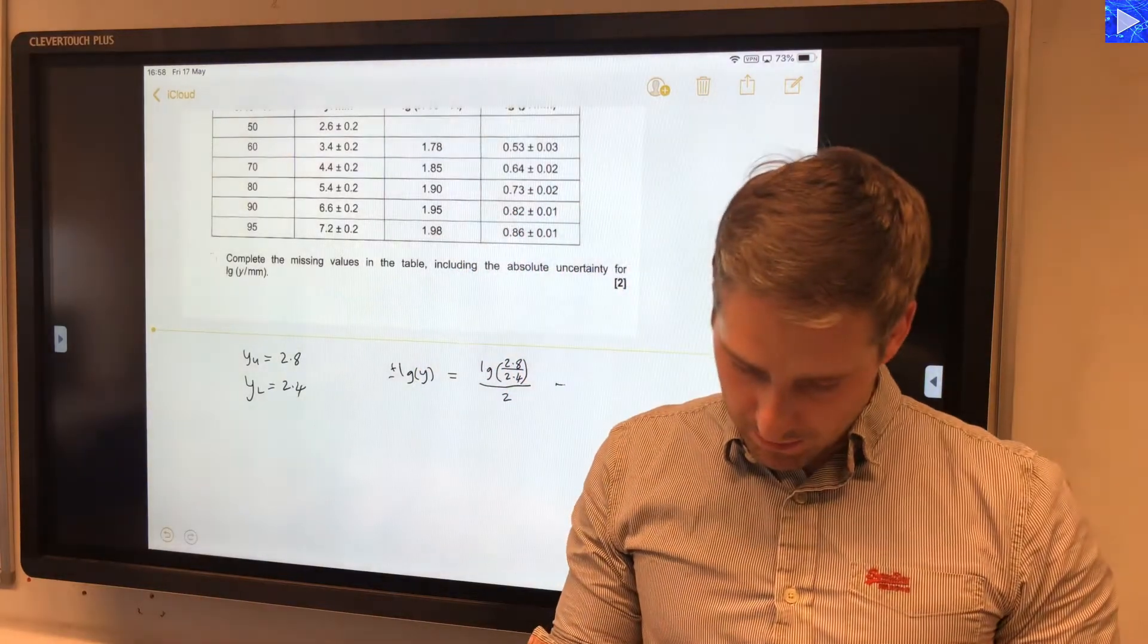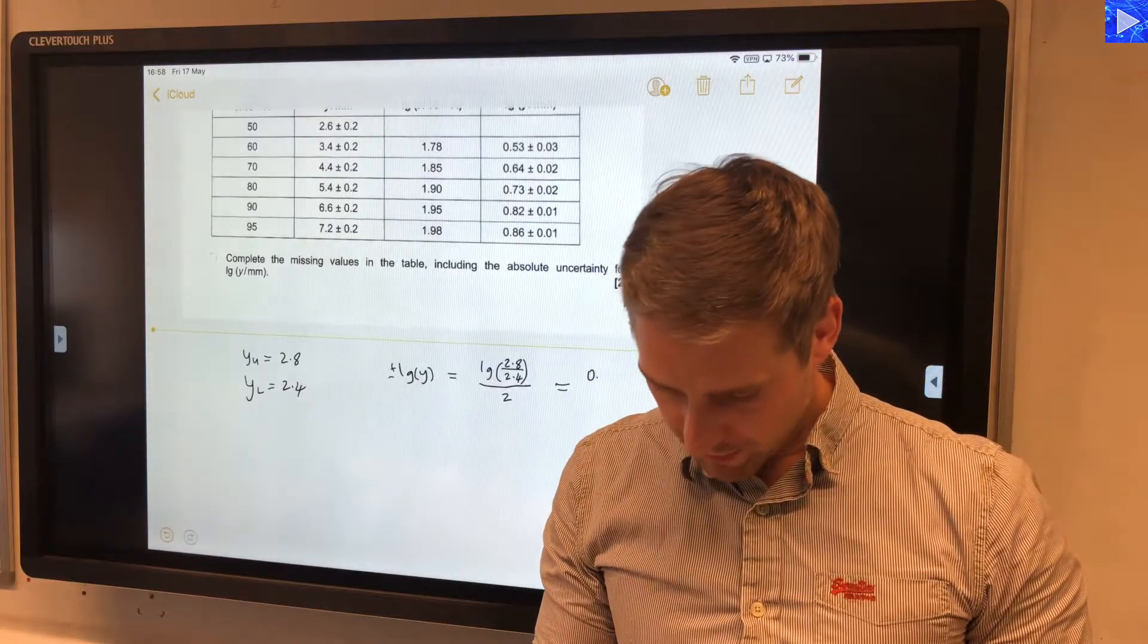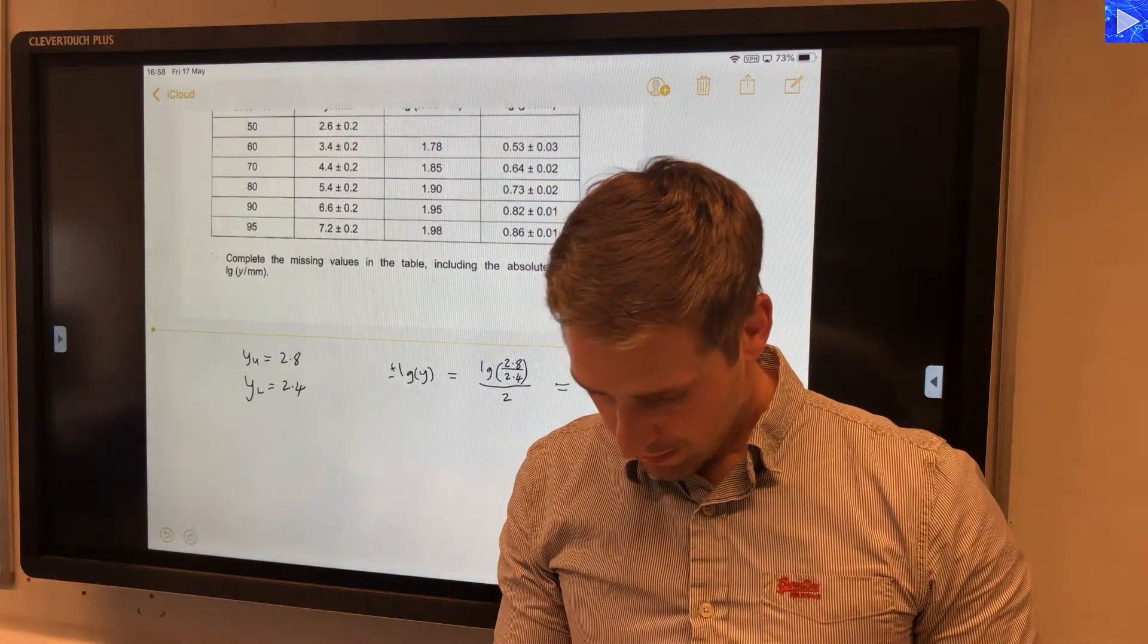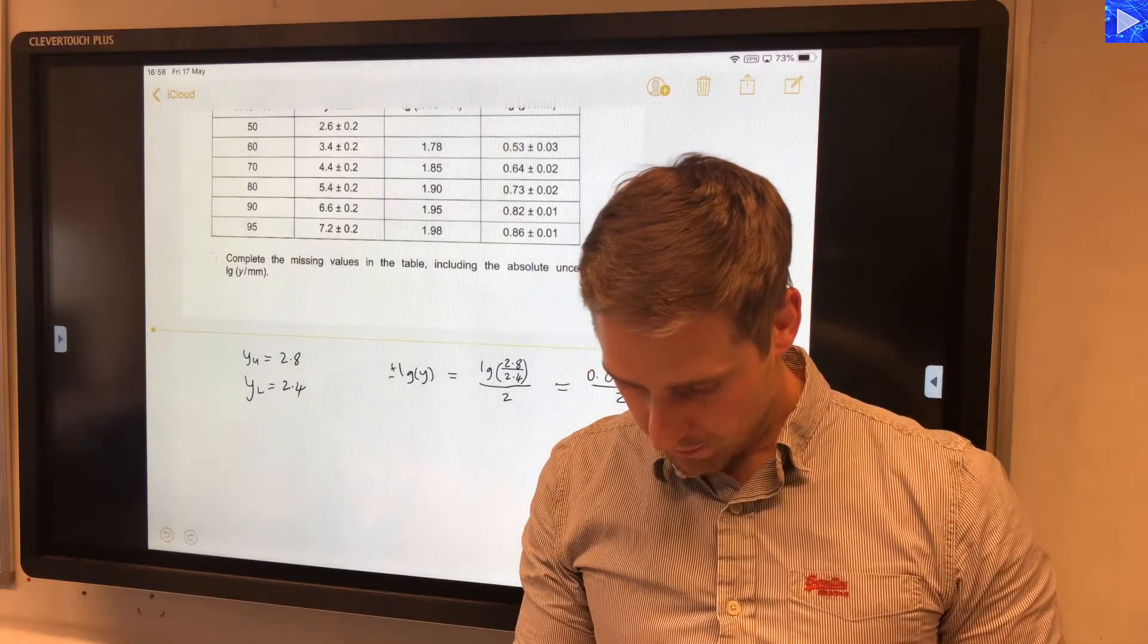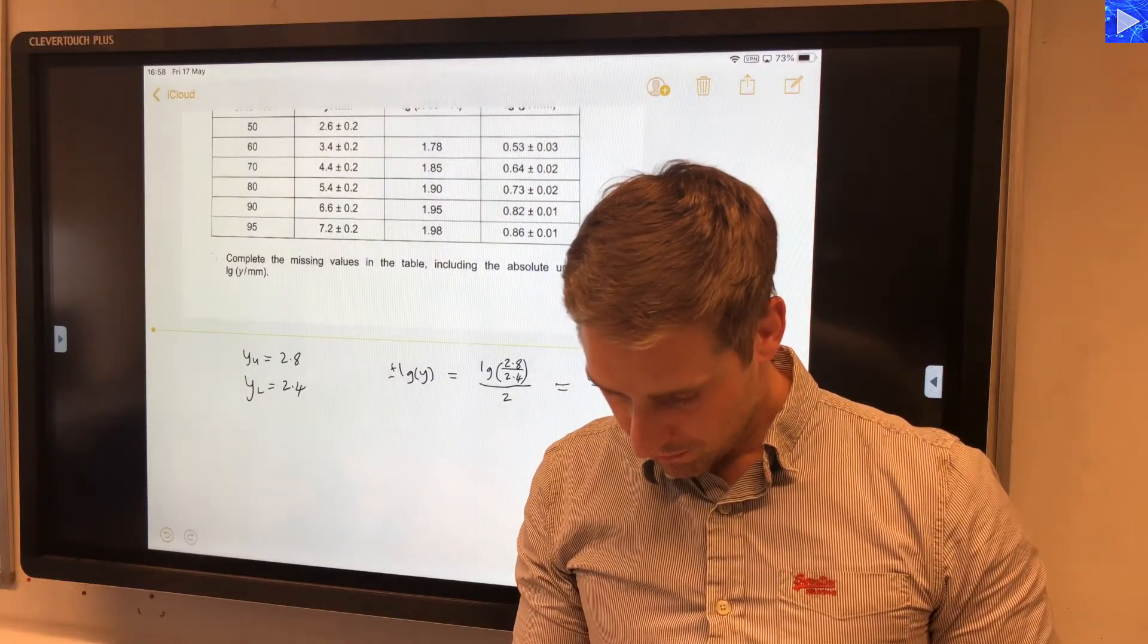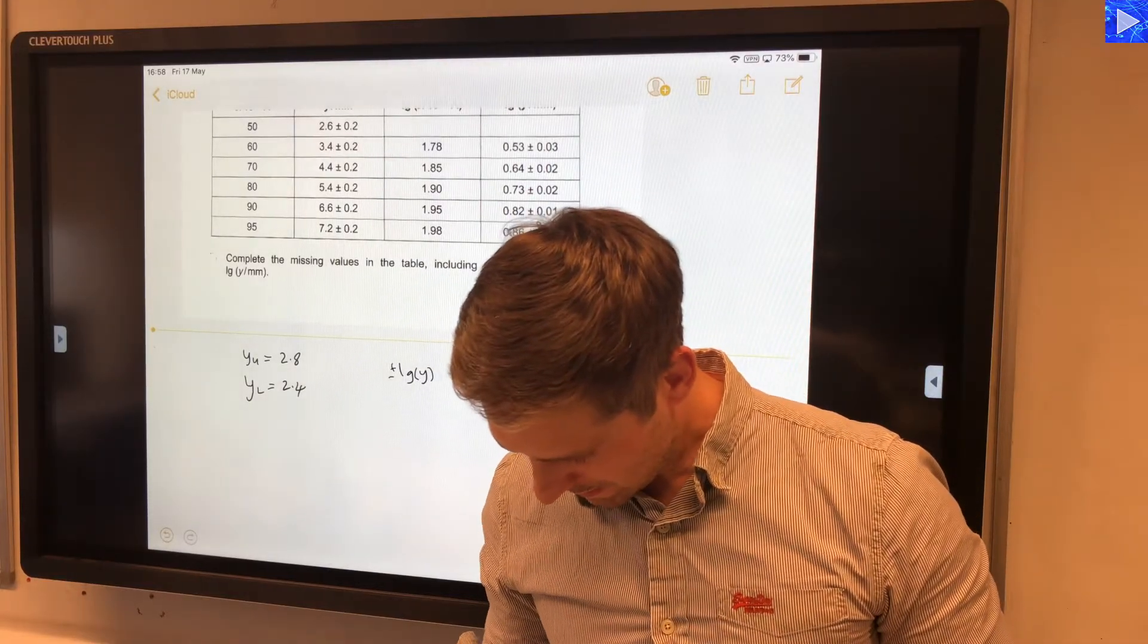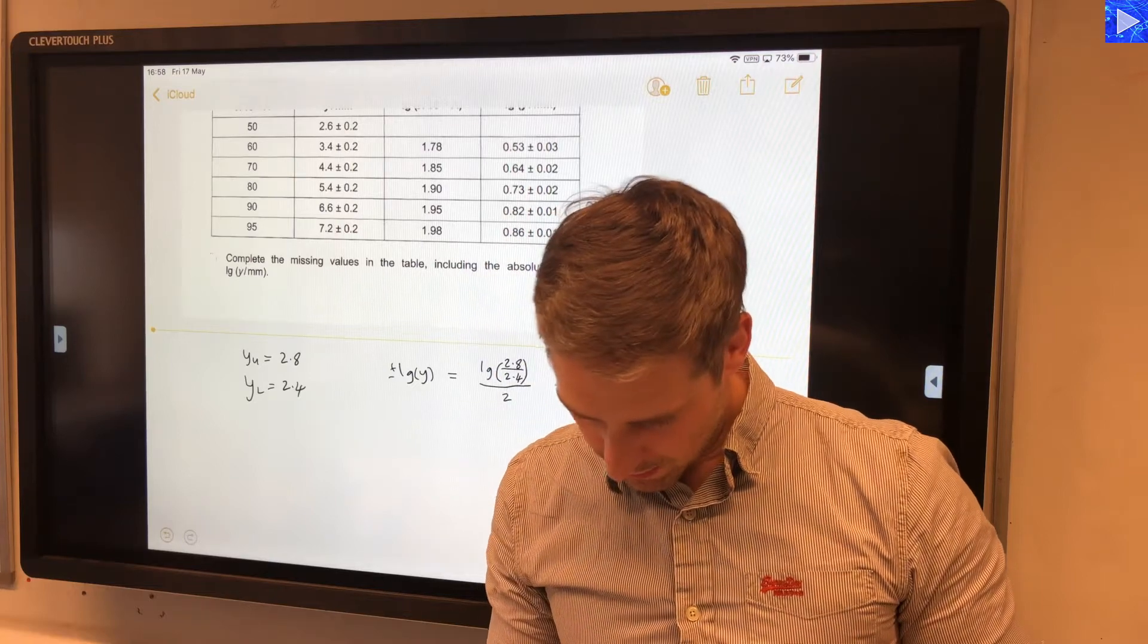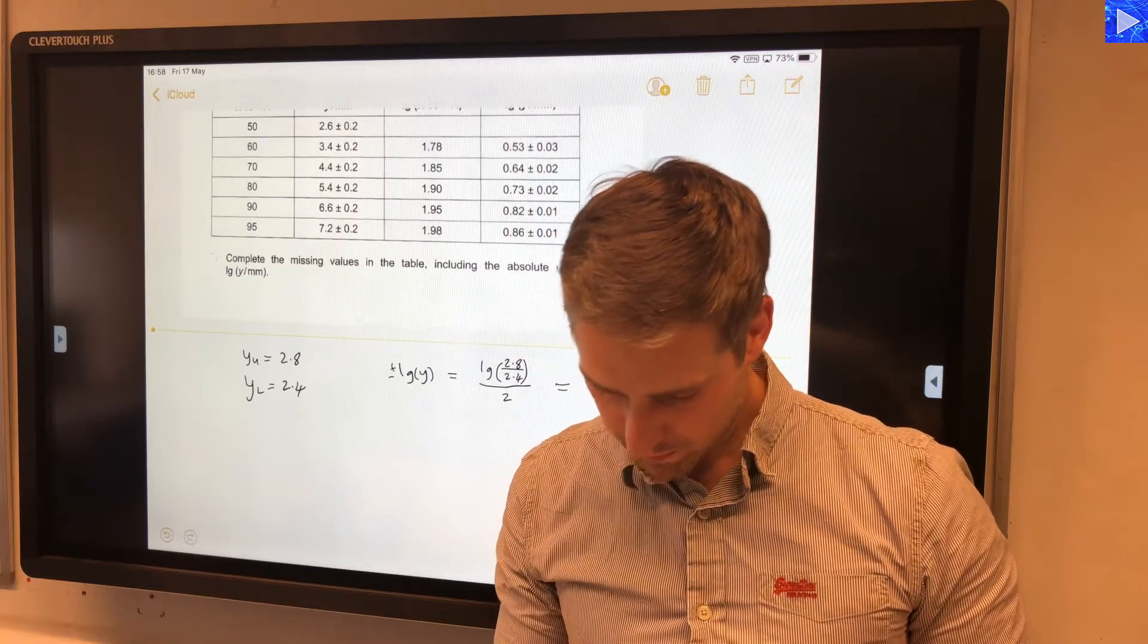So if I just write down what the actual value is, just so you can verify that, it would be over 2, which is 0.0334.